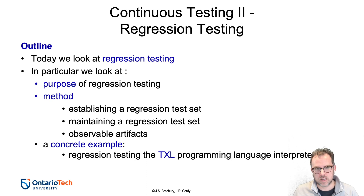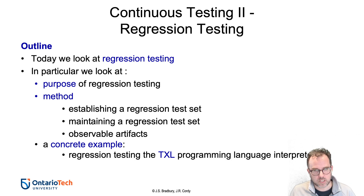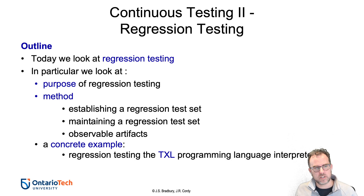I've got a concrete example, a case study here for you. It's kind of tough sometimes to get these examples because you may not have the full information if it's an open source project, or if it's closed source people may not want to give it to you. So the example I have is actually something with a programming language interpreter called TXL. It's from a while ago that I got from my former supervisor Jim Cordy, who's a professor emeritus at Queen's University. They had a company where they were actually maintaining TXL internally, and it's still maintained now by him and several others. So we're going to look at that concrete example of regression testing.